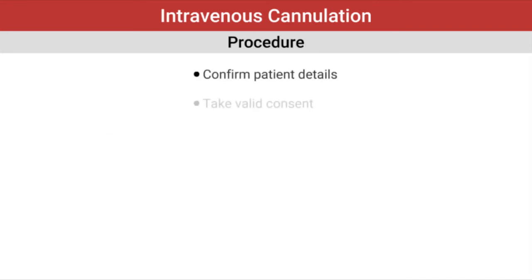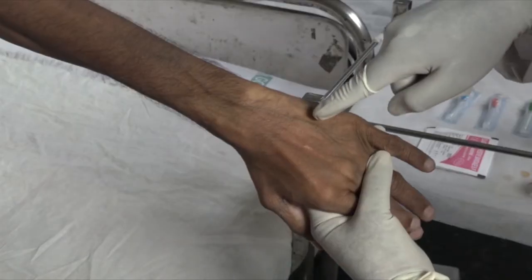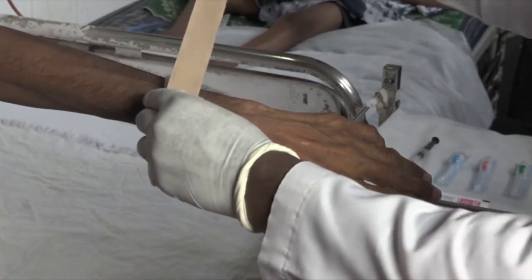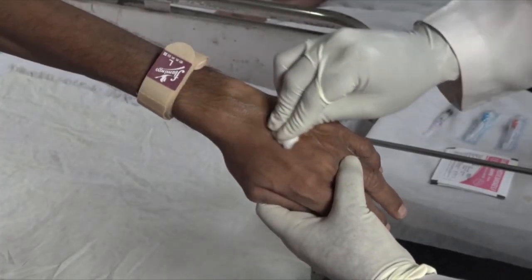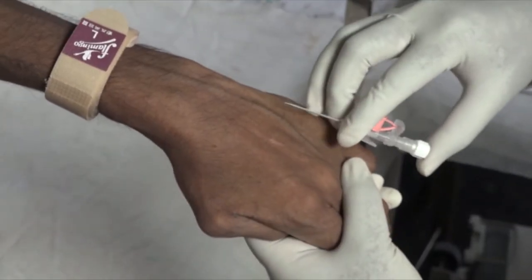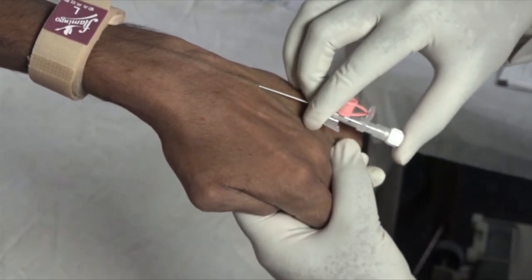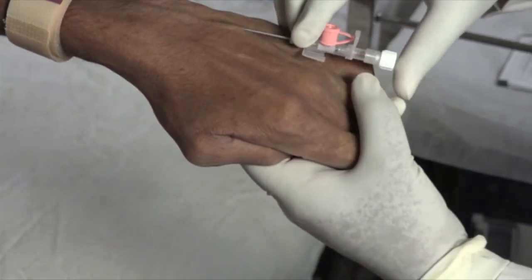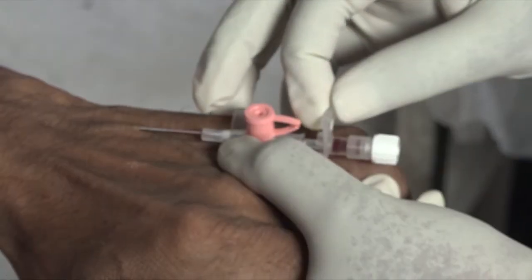Procedure for IV cannulation: confirm the patient details, explain the procedure to the patient, take the patient's consent. Clean the hands, wear gloves, position the patient's arm properly, inspect the arm for a suitable vein, apply a tourniquet proximal to the site of insertion. Clean the skin site for 30 seconds and allow to dry. Palpate the surface for the vein, prepare the cannula, secure the vein from below, insert the cannula at an angle of 10 to 30 degrees to the skin, observe the flashback, withdraw the introducer needle, advance the cannula into the vein, and remove the introducer needle.